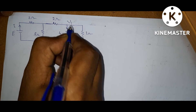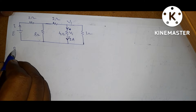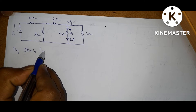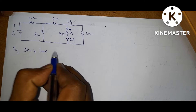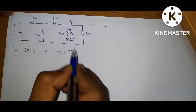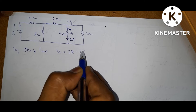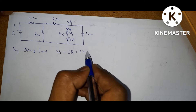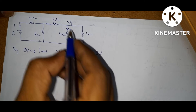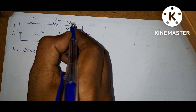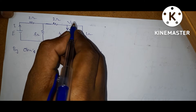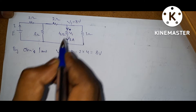Now what is V1 by Ohm's law? V1 is equal to IR. Current here is 2 amps and resistance is 4, so it equals 8 volts. So V1 is equal to 8 volts — this is plus, this is minus, equal to 8 volts.